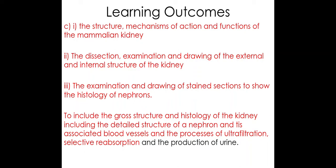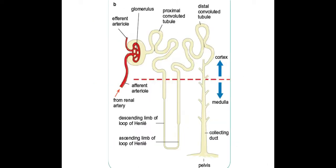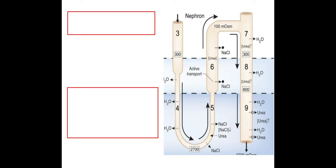Welcome biologists to part four of specification point C, where we're going to be looking at the production of urine in the loop of Henle. The loop of Henle is this loop-looking structure in the medulla part of the kidney. What goes on in the loop of Henle will also impact upon the collecting duct, which we'll cover in the next video. Anything in a red box is taken directly from the mark scheme, which we need to be aware of.